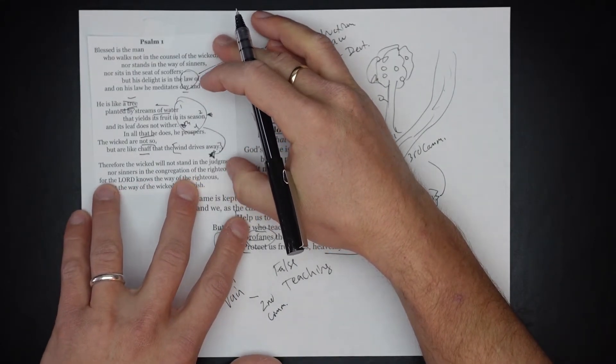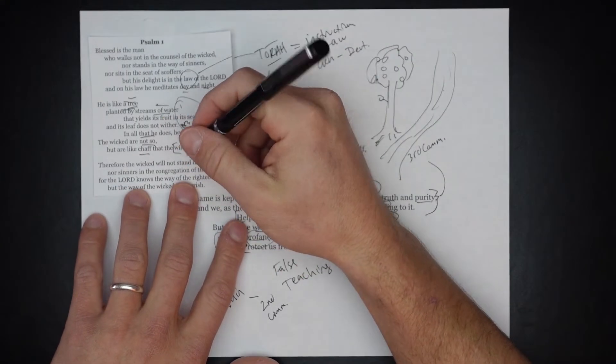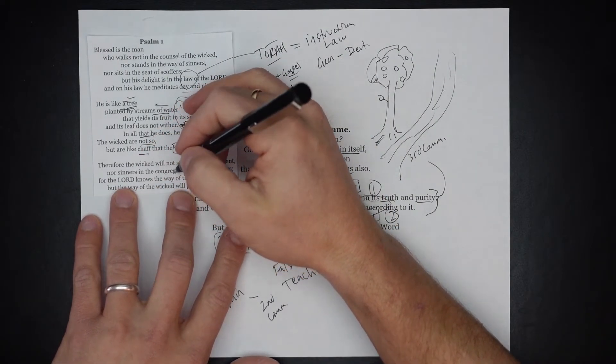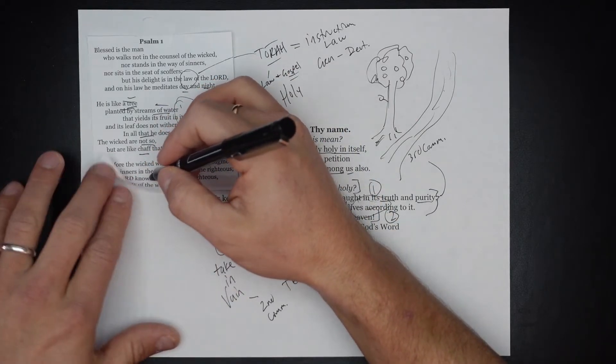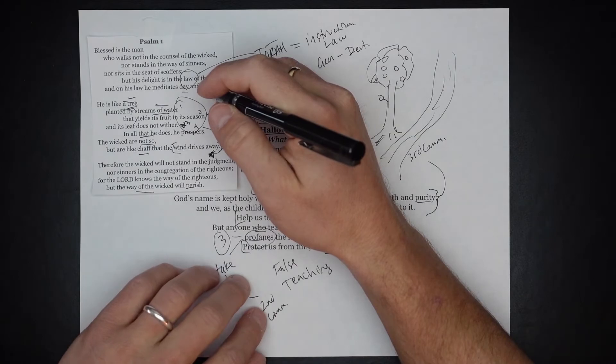All the qualities of the wicked man, there are none. The wind drives them away. Therefore the wicked will not stand in the judgment, nor sinners in the congregation of the righteous. For Yahweh knows the way of the righteous, but the way of the wicked will perish.